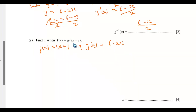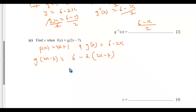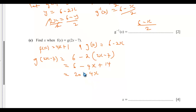We need to first find g(2x minus 7). Anywhere we see x in g(x), we pass in 2x minus 7, giving 6 minus 2(2x minus 7), which is 6 minus 4x plus 14. That equals 20 minus 4x. So g(2x minus 7) equals 20 minus 4x.